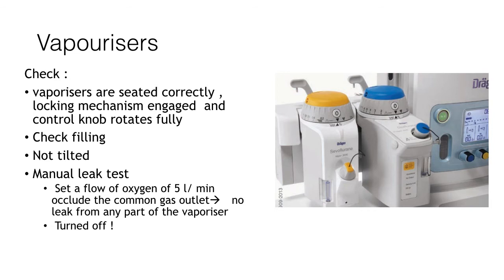You should also then complete the manual leak test. This involves setting the oxygen flow to 5 litres a minute, occluding the common gas outlet, and assessing to see if there is any leak from any part of the vaporizer. If a leak is present then the flow bobbins would dip. Finally before moving on, you need to check that the vaporizers are turned off.